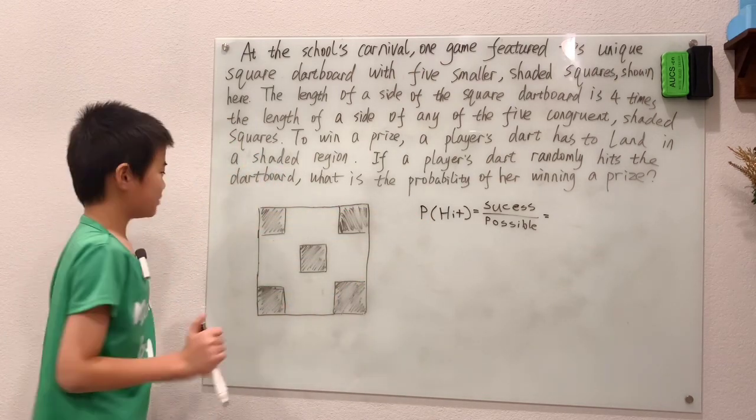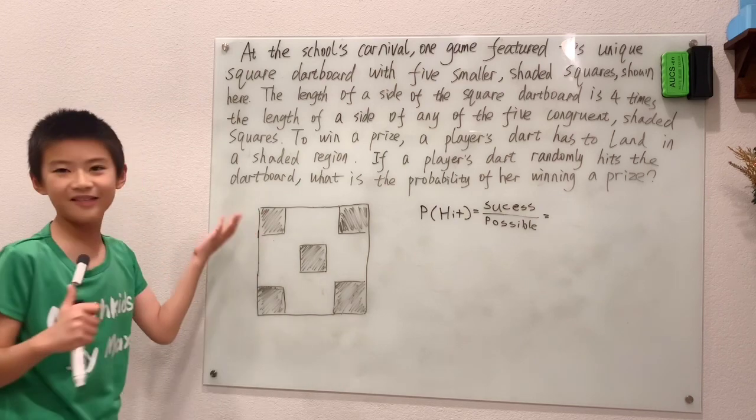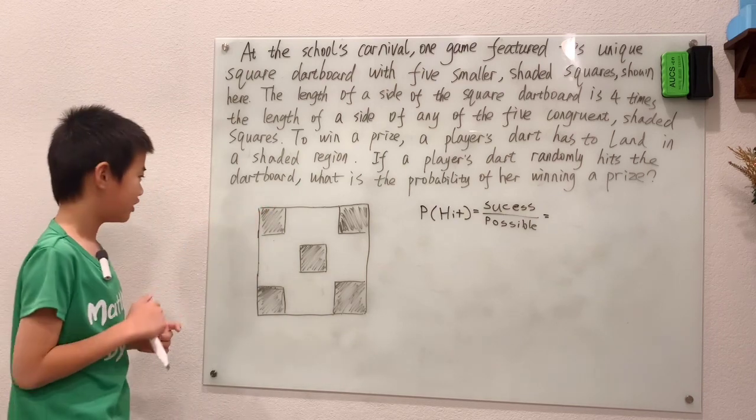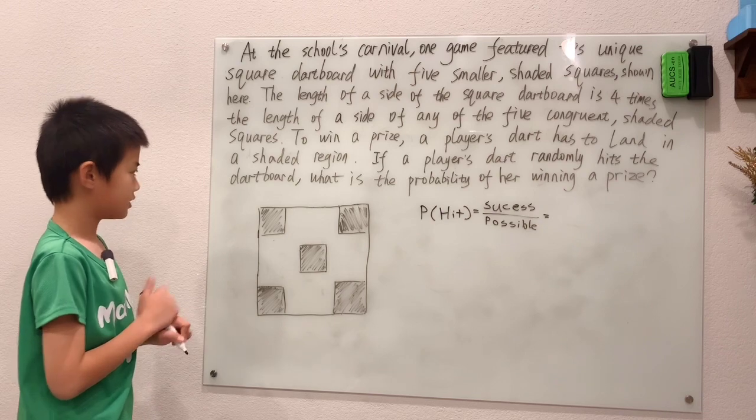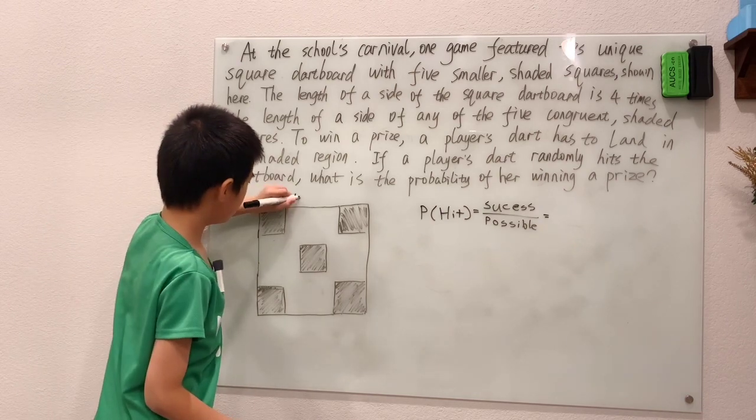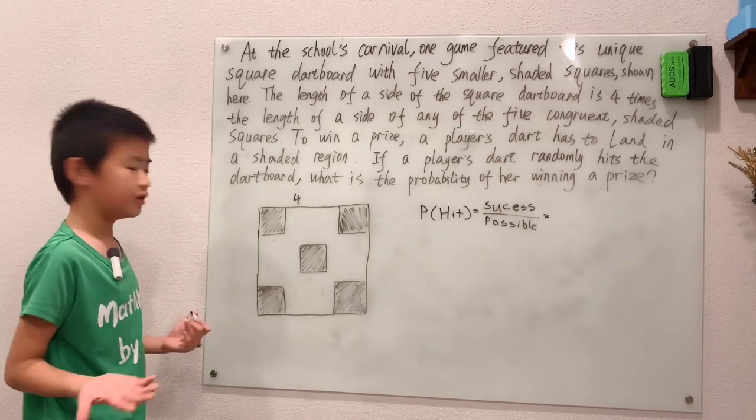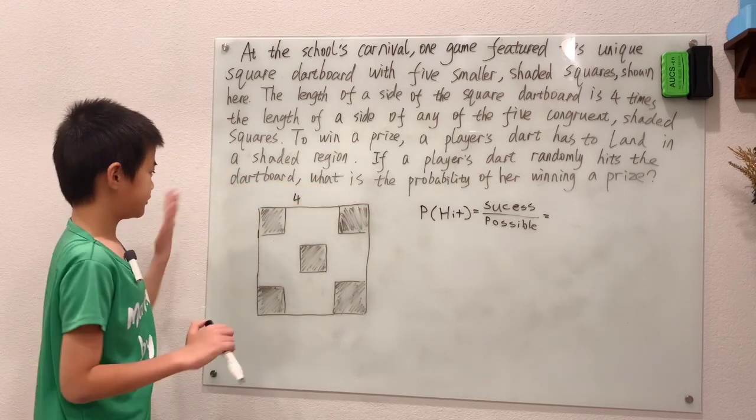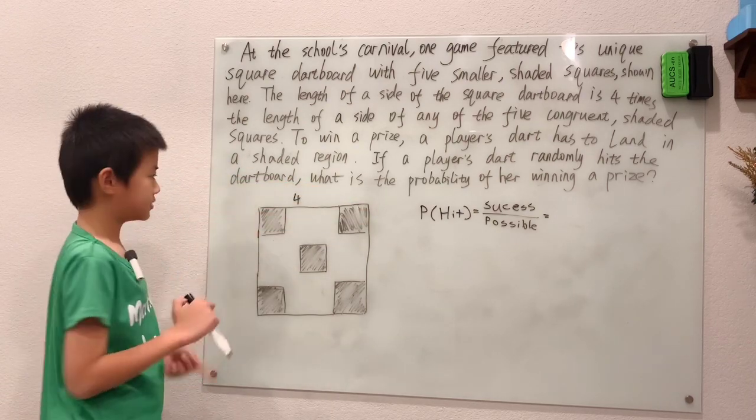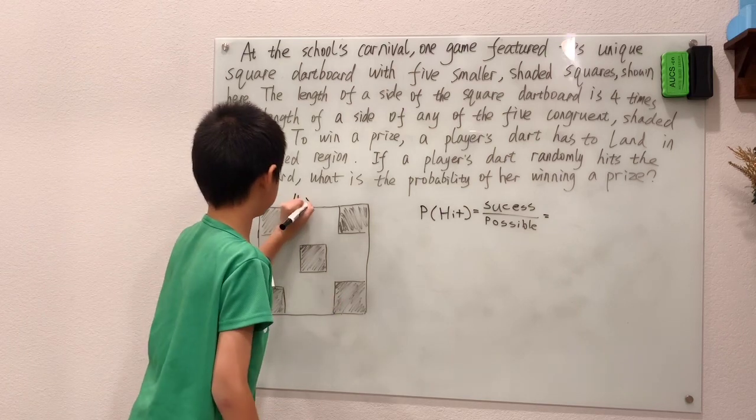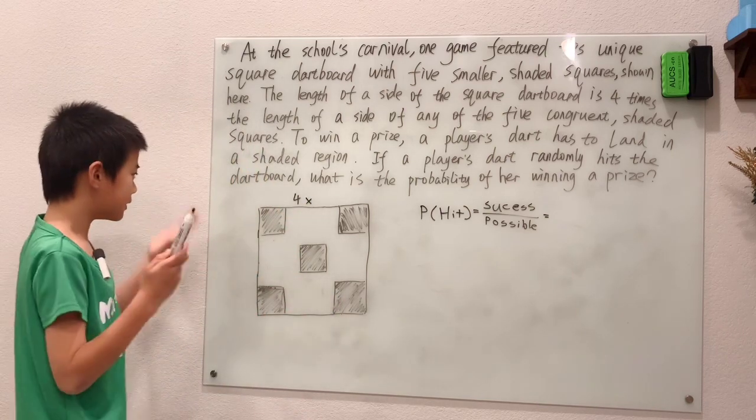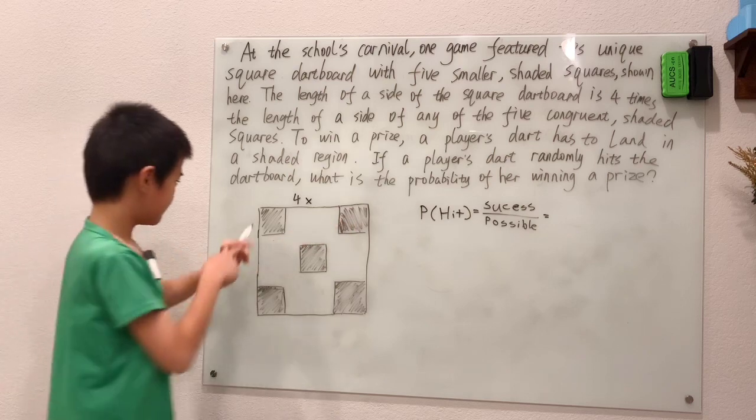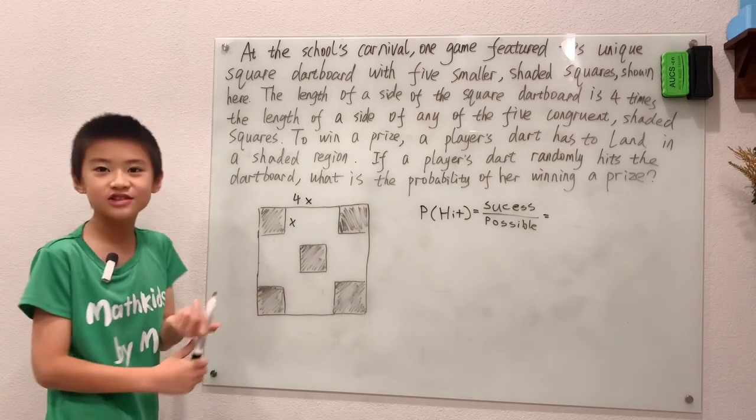But there's a problem. We can't figure out the area of these small squares either, because all we know is that the side length of the big square is four times the side length of the small square. So let's call that x. X can be anything, but x is our side length. You can just use variables.